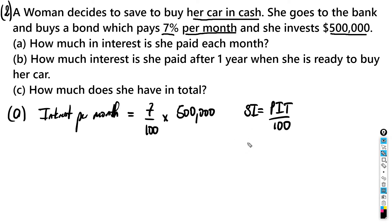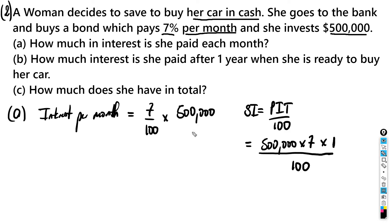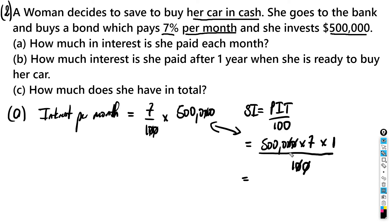The principal is $500,000, the interest rate is 7, and the time period is one month, so we get 500,000 times 7 times 1 divided by 100. The two zeros cancel, leaving 5,000 times 7, which equals $35,000. She is paid $35,000 each month.